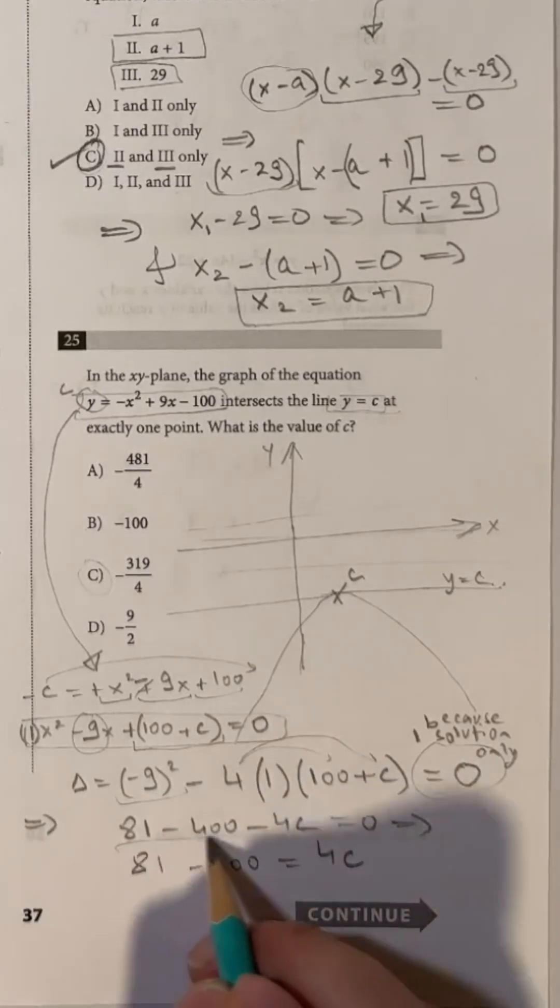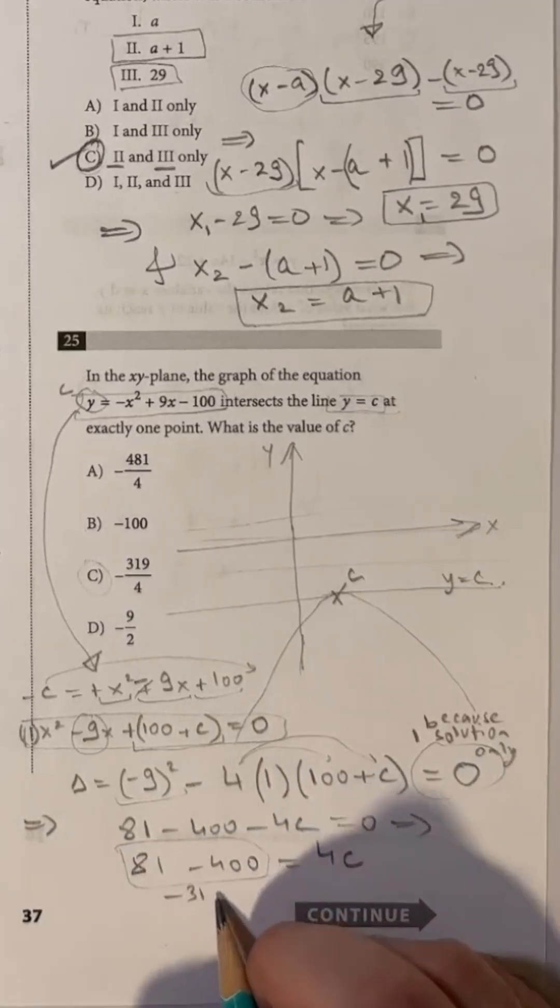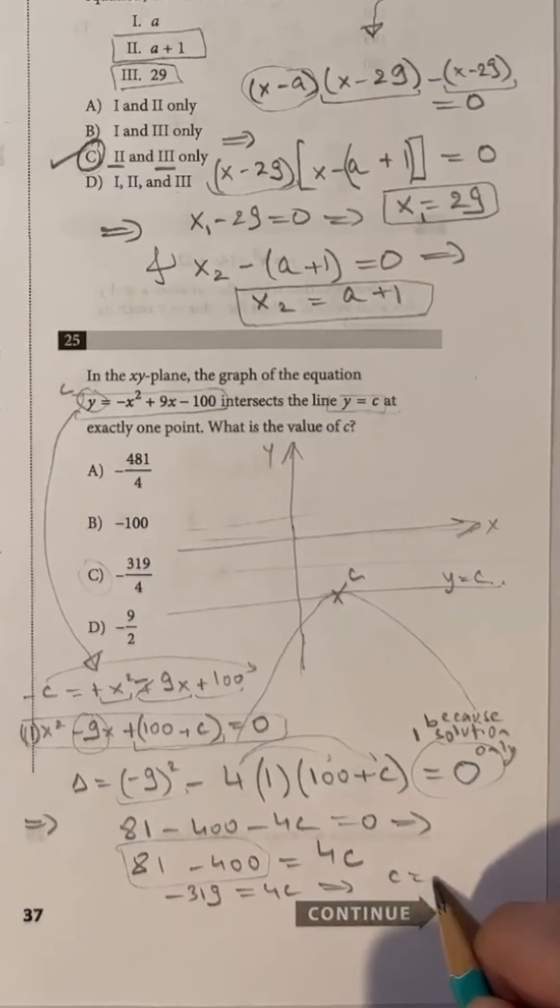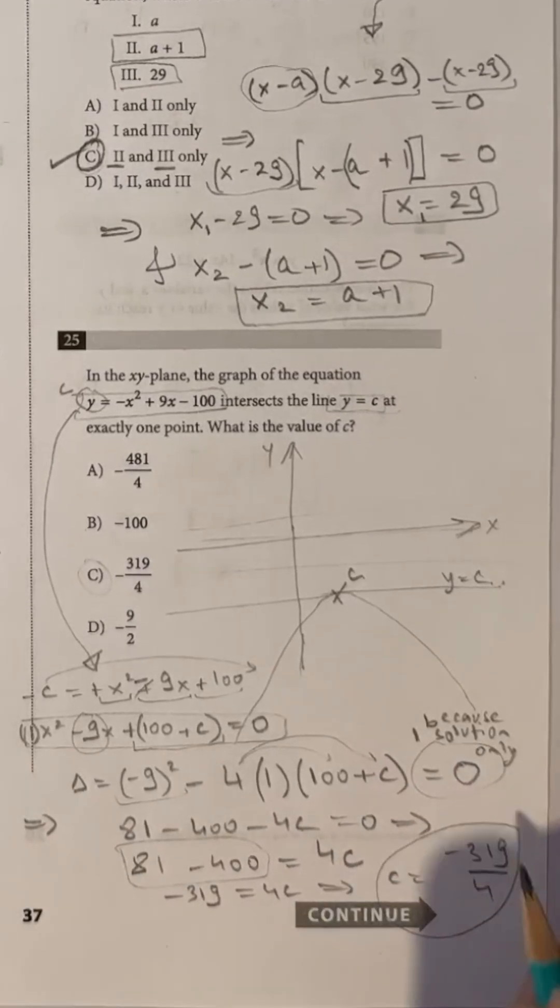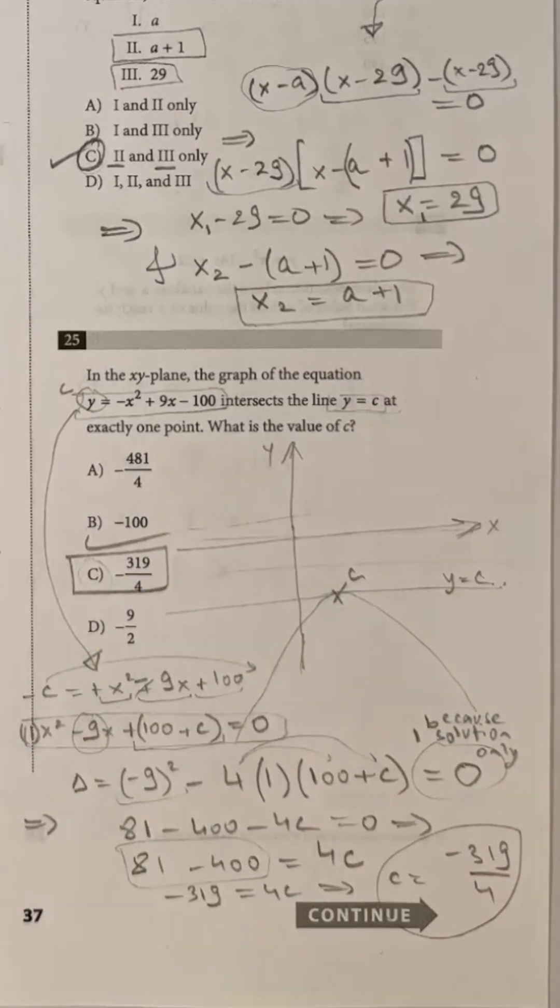81 minus 400 is minus 319. Divide both sides by 4. c equals minus 319 over 4 which is choice c.